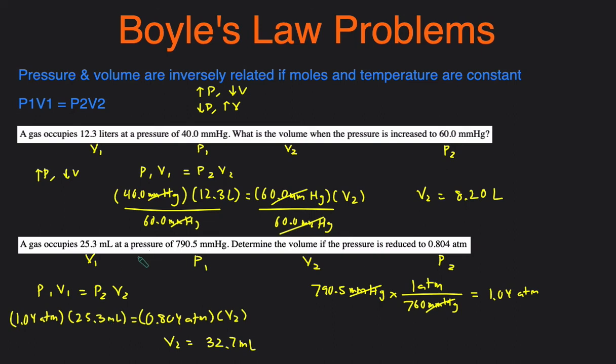Let's check if that matches our expectation. The pressure decreased from 1.04 atm to 0.804 atm. So since the pressure decreases we expect the volume to increase and it did increase because it went from 25.3 milliliters to 32.7 milliliters.